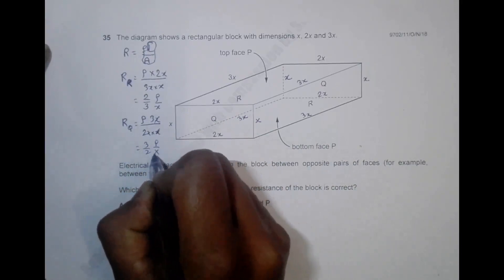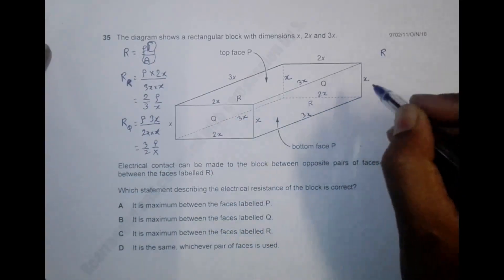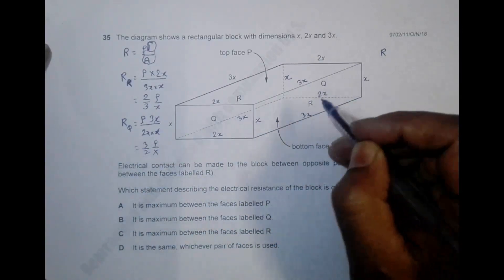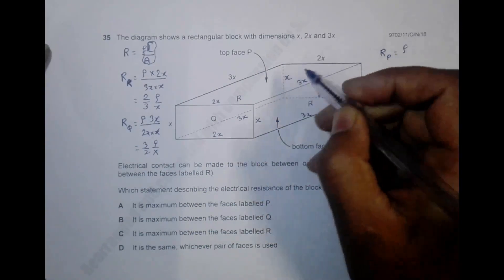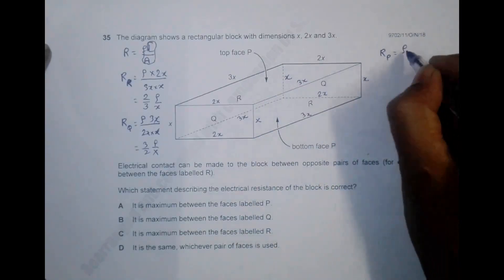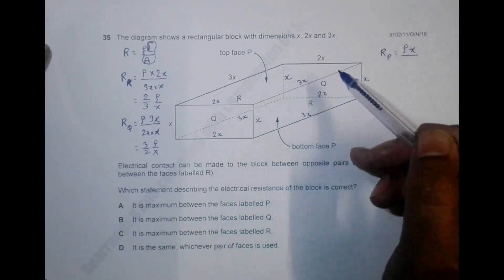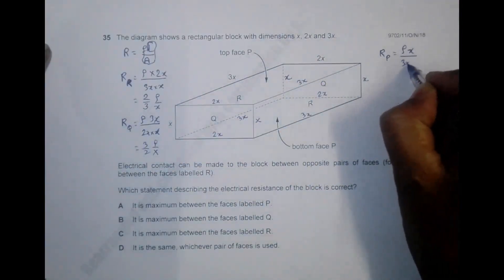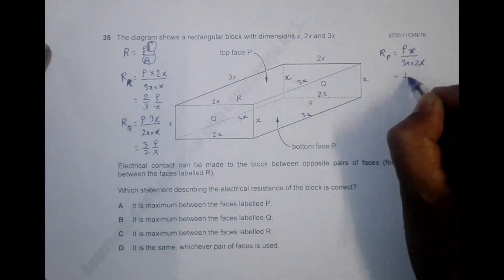The resistance across the P faces: the length from one P face to the other is x, and the cross-sectional area is 3x × 2x = 6x². So resistance across P = ρ × x / 6x² = ρ/6x.